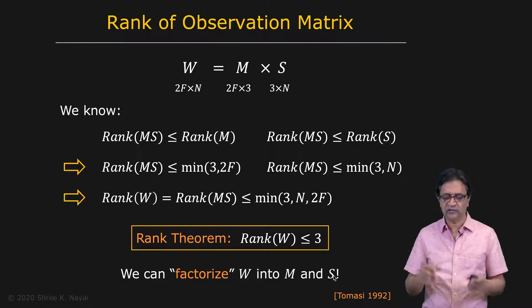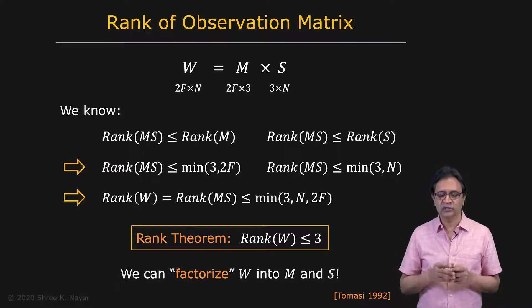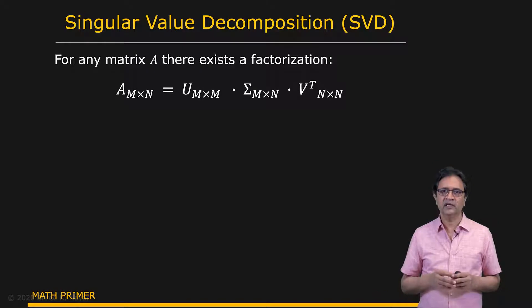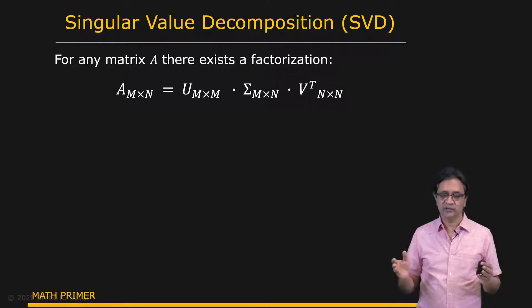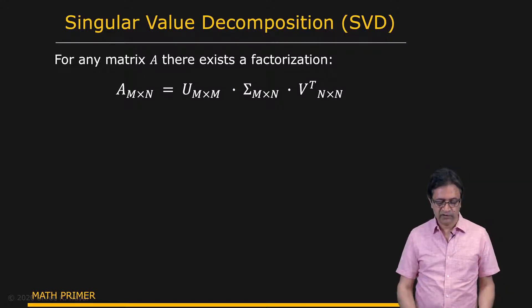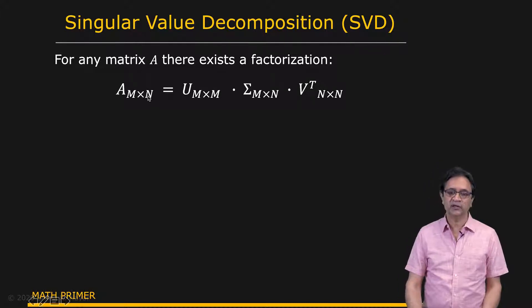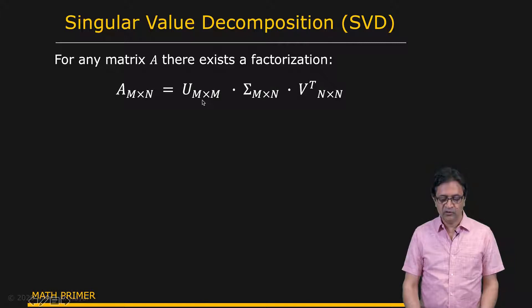In order to do this factorization, we are going to use a very popular technique in linear algebra called singular value decomposition, or SVD. The SVD can be applied to any matrix. For any matrix A, which is an M by N matrix, when you apply singular value decomposition, you get three matrices: it is the product of U, sigma, and V transpose.